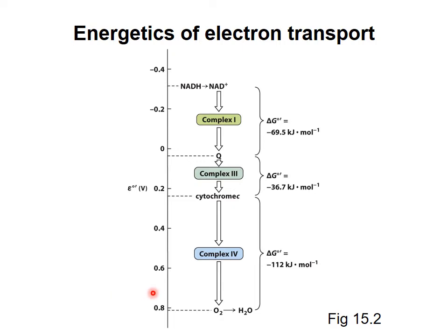So you can see the electrons pass from one carrier to another in a defined order of increasing electron affinity. Each step has a strongly negative delta G value, providing enough energy to do the work of pumping protons out of the mitochondrial matrix.